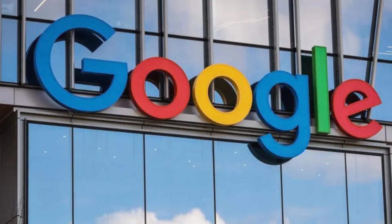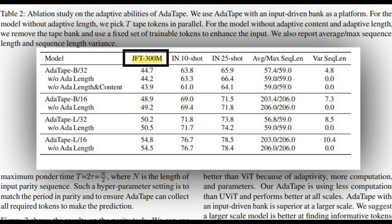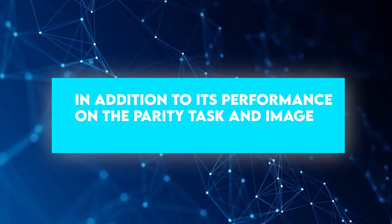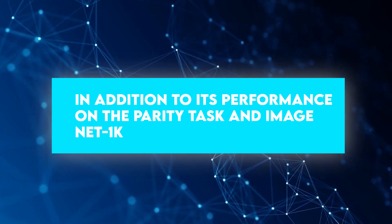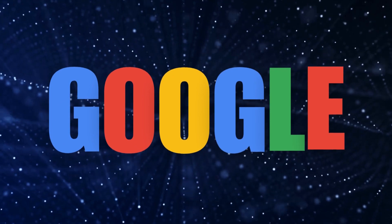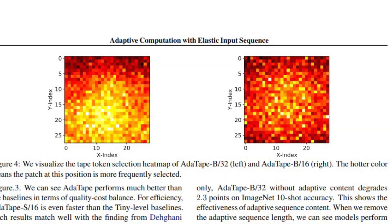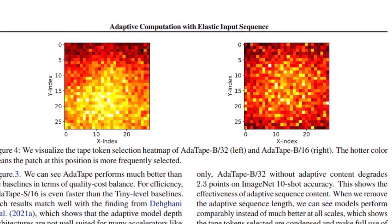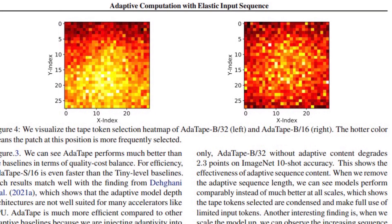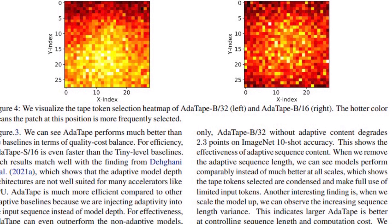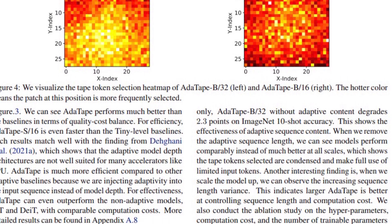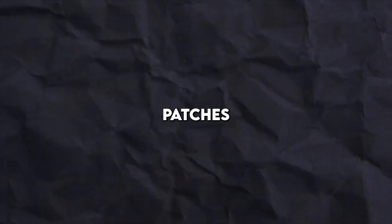Google evaluated Adatape's token selection behavior on the JFT-300M validation set. To better understand the model's behavior, Google visualized the token selection results on the input-driven bank as heat maps, with lighter colors indicating more frequent selection. The heat maps demonstrate that it tended to select central patches more frequently, which is consistent with existing knowledge that these patches are usually more informative, particularly in datasets with natural images where the main object is in the center. This result showcases the model's intelligence in identifying and prioritizing informative patches to enhance its performance.